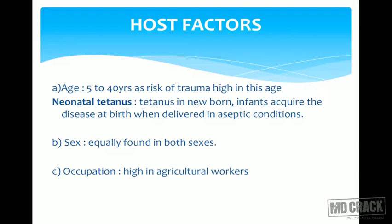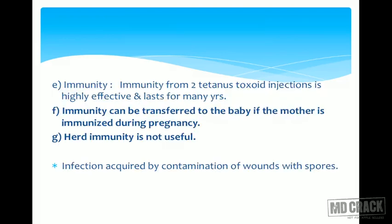Regarding sex, tetanus is equally found in both sexes, and is obviously high in agricultural workers both because of increased prevalence of injury and proximity to sources of Clostridium tetani. Immunity from two tetanus toxoid injections is highly effective and lasts for many years — not lifelong, but many years. Immunity can be transferred to the baby if the mother is immunized during pregnancy. Herd immunity is not at all useful here; individual immunity is important. Tetanus is an example where herd immunity will not help.